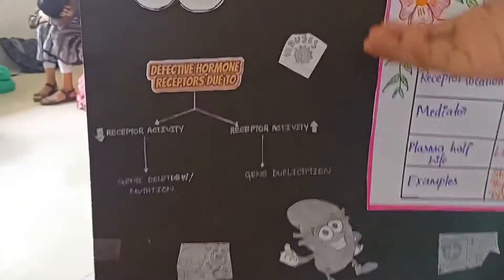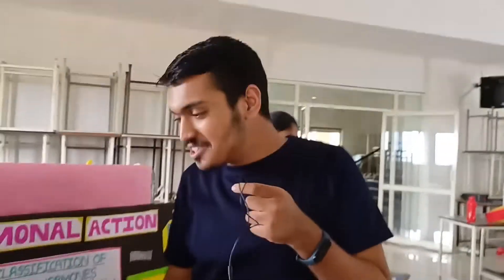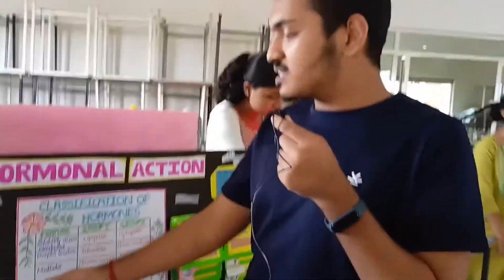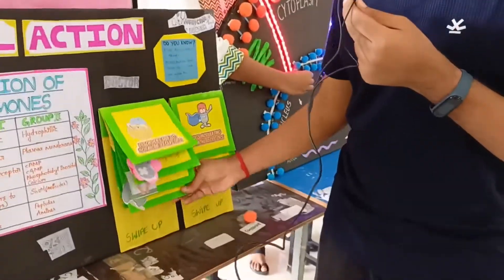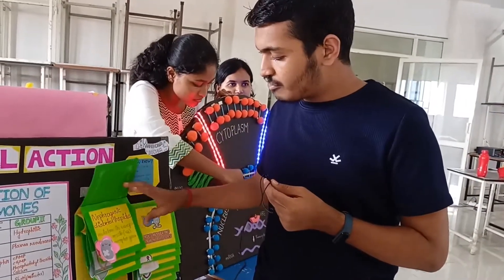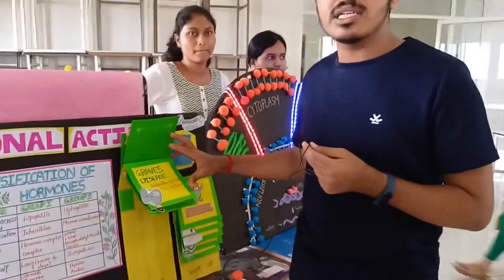Now we discuss a few disorders related to this and what causes these disorders. The reasons why there can be diseases: one is because of defective hormones. The reason for defective hormones is a decrease in receptor activity or an increase in receptor activity. Decrease in receptor activity is because of gene mutation, and increase in receptor activity is because of gene duplication. The first disorder is nephrogenic diabetes insipidus, due to a mutation in the vasopressin receptor gene. Then we have Graves' disease, caused by antibodies against TSH receptors.